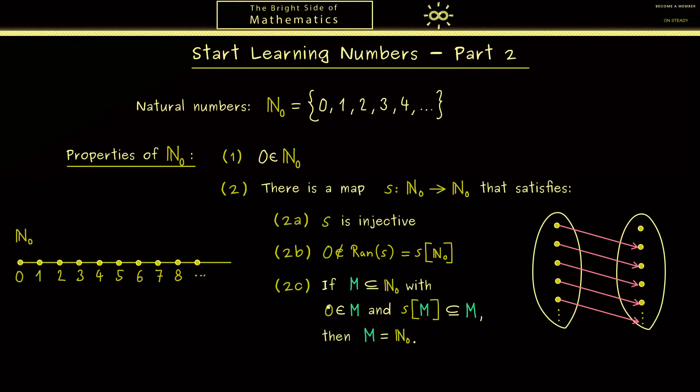We can also explain this in other words when M describes some property. Then this here means that 0 fulfills this property, and in addition if an element fulfills the property, the successor satisfies it as well. Then the result is that all natural numbers fulfill this property. And this whole procedure is known as the mathematical induction.